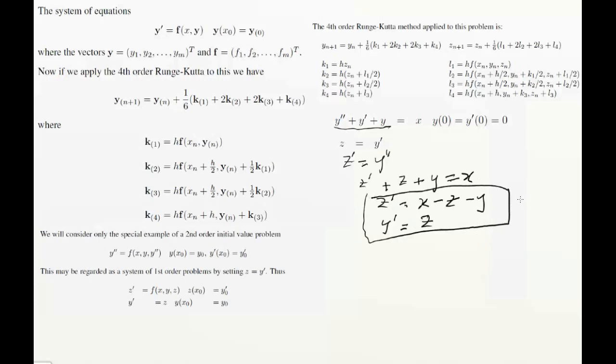And of course, the initial conditions. Now, look, y of 0 equals 0. So that means that we have here, we'll have alongside here, y of 0 equals 0. And now z prime is really, sorry, y dash is z. So that means that we'll have z of 0 equals 0 as well. So now we've got our full system.